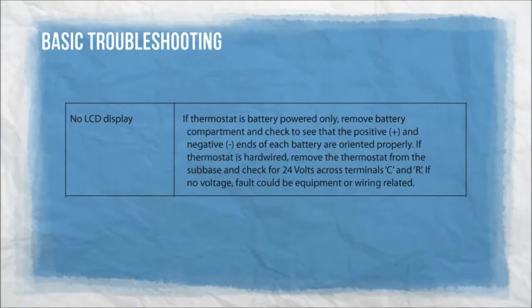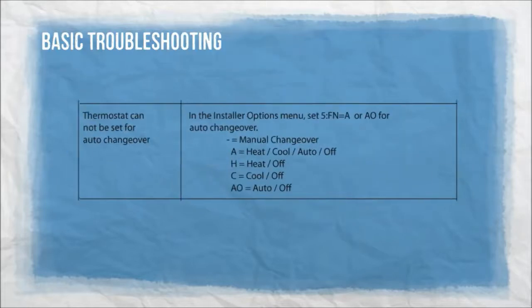Basic troubleshooting — no LCD display. If the thermostat is battery powered only, remove the battery compartment and check that the positive and negative ends of each battery are oriented properly. If the thermostat is hardwired, remove the thermostat from the sub base and check for 24 volts across terminals C and R. If no voltage, the fault could be equipment or wiring related.